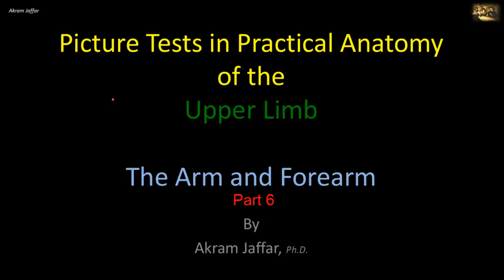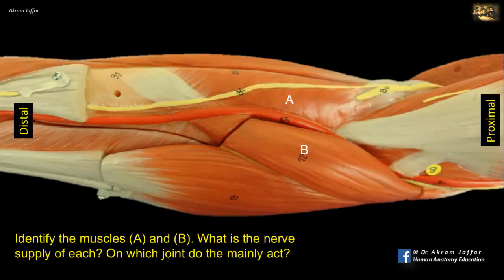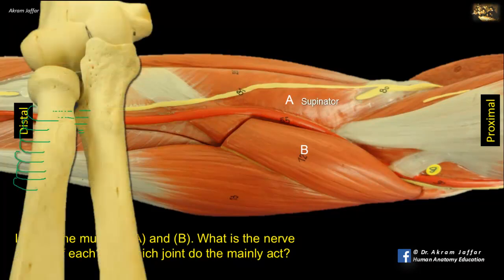Now I will deal with the anatomy of the arm and forearm. Identify the muscles A and B. What is the nerve supply of each and on which joint do they mainly act? A is a deep muscle in the floor of the cubital fossa, shown here to wrap around the radius. It can be clearly shown because brachioradialis overlying it has been removed. It is the supinator muscle.